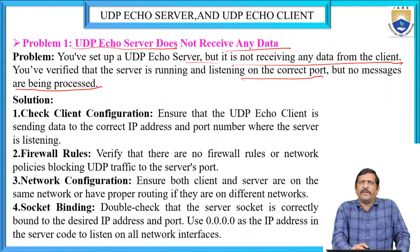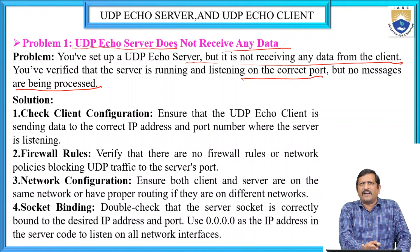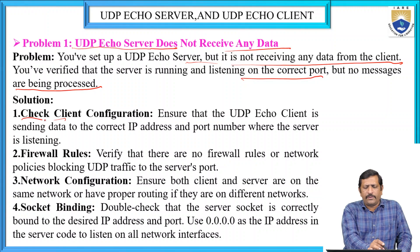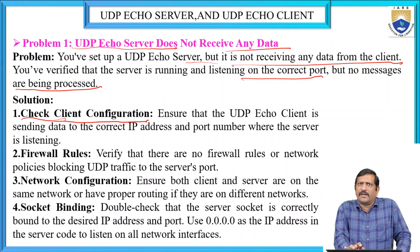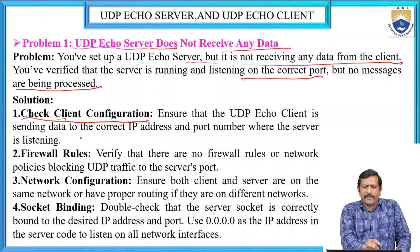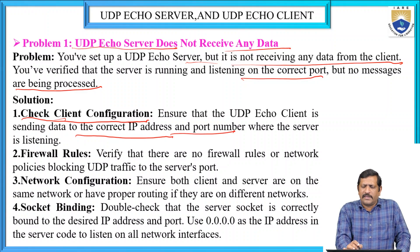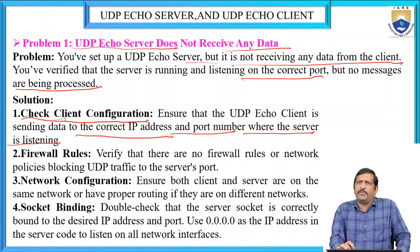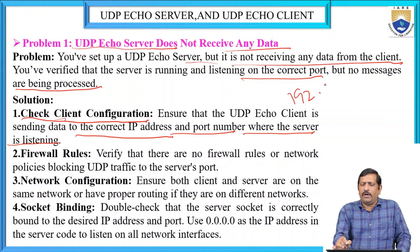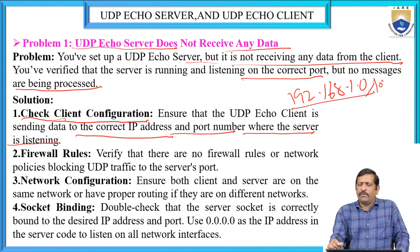The solutions: first, check client configuration. Ensure that the UDP client is sending data to the correct IP address — for example, 192.168.1.0 — and the correct port number, for example port 1024, where the server is listening. We have to cross-verify that we are sending to the correct IP address and port number.